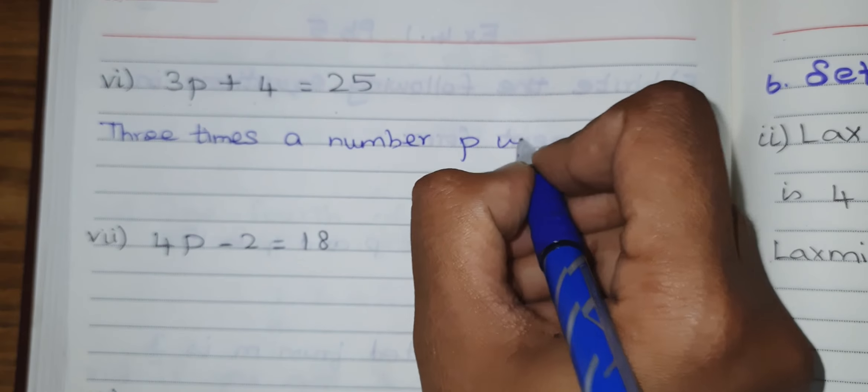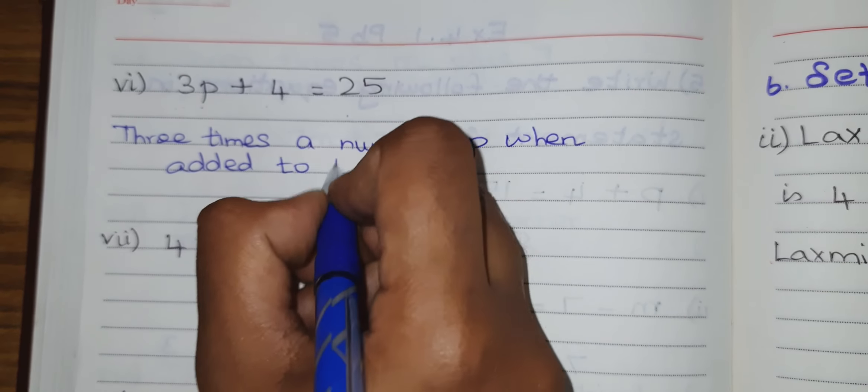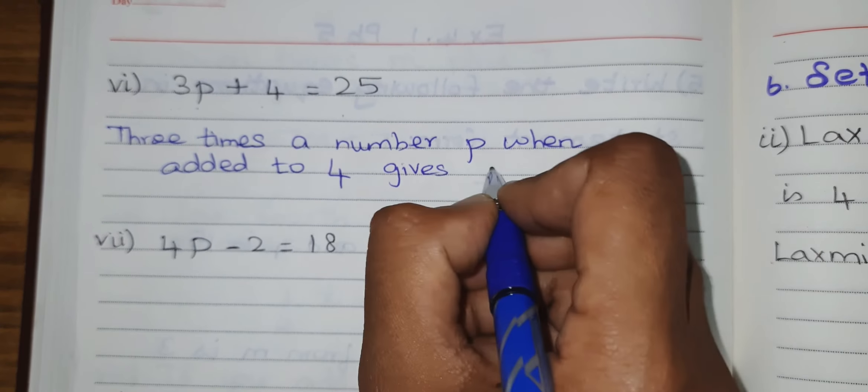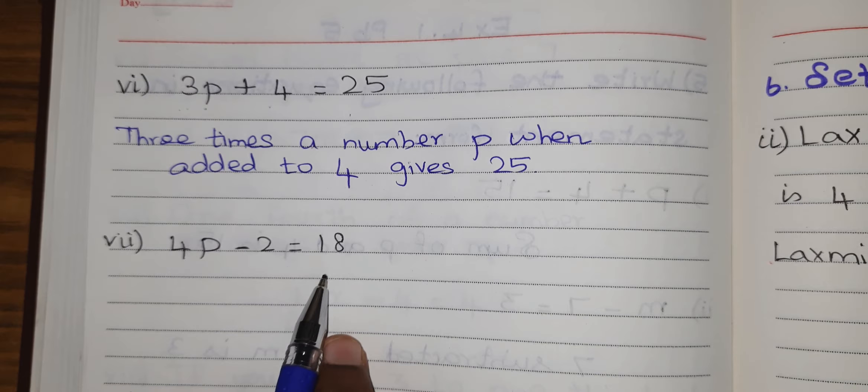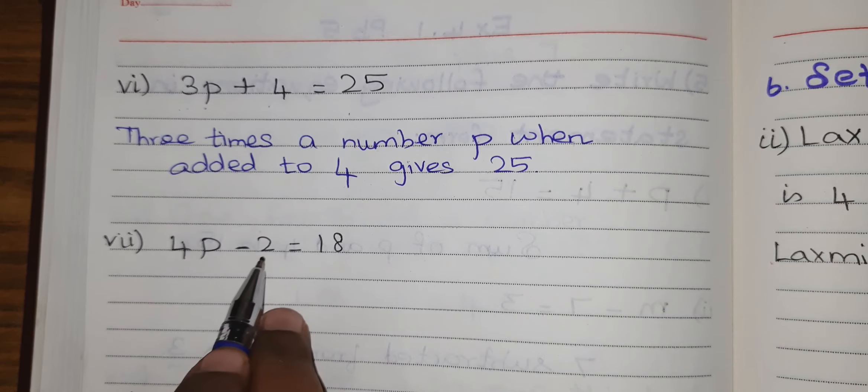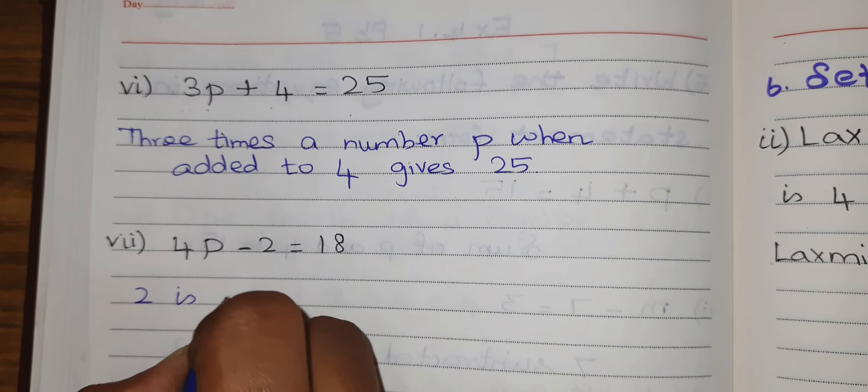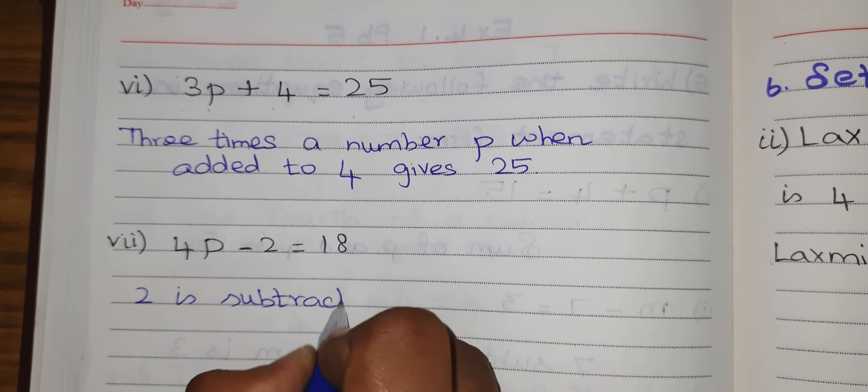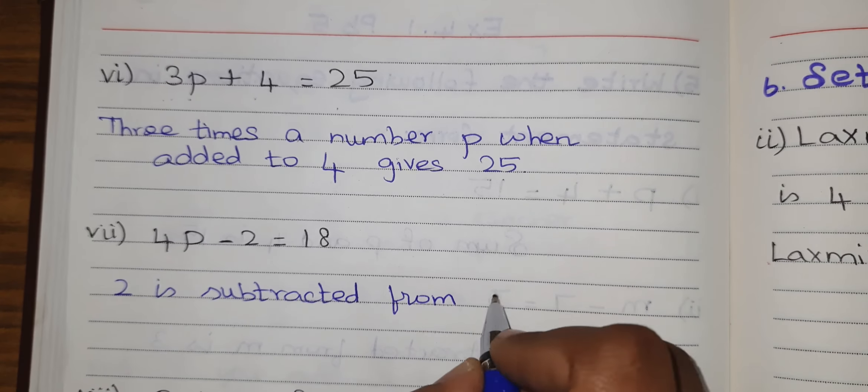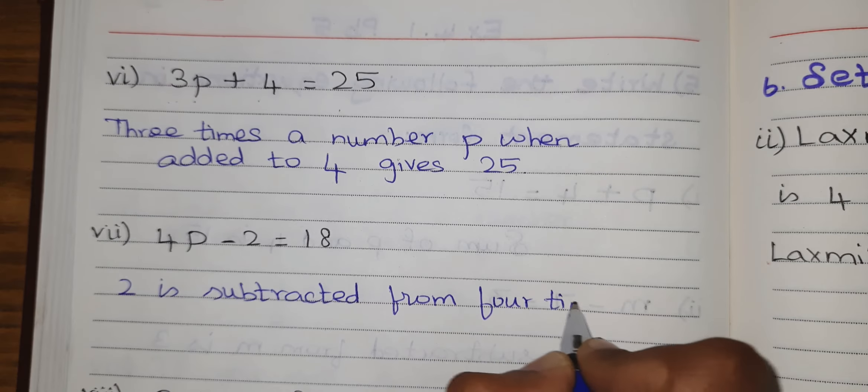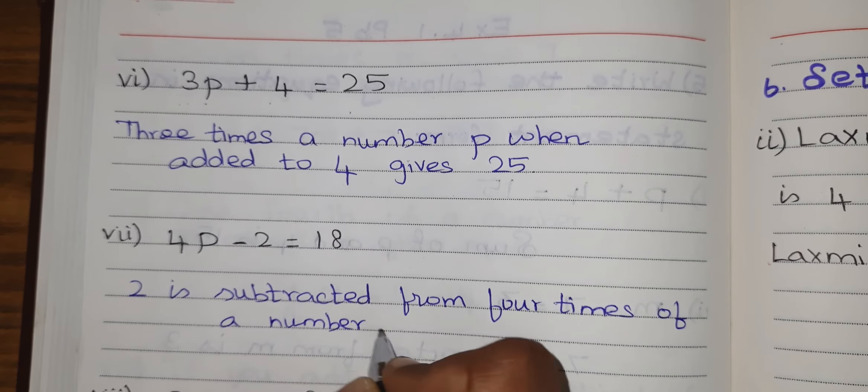4p minus 2 equal to 18. 2 is subtracted from 4p. 4p means 4 times of a number p. So 2 is subtracted from 4 times of number p is 18.